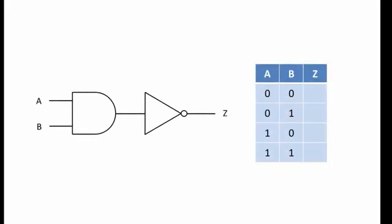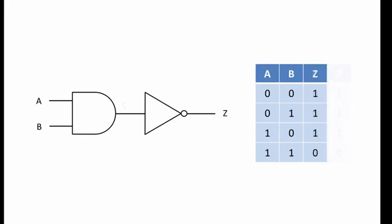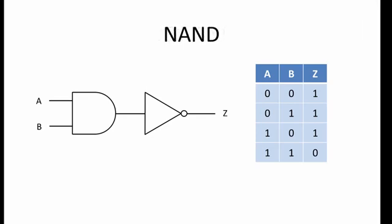This combination is an AND gate followed by a NOT gate. To get the values at Z, we can consider position C first of all. Each value at C is simply the result of passing combinations of A and B through an AND gate. You can see in the bottom row, when both A and B are 1, the value of C is 1. To get each value of Z, we then pass each value of C through a NOT gate. So here is our truth table. We can ignore values of C if we are not interested. This combination of gates is also extremely useful, and it is sometimes referred to as the NOT AND combination, or simply NAND for short.